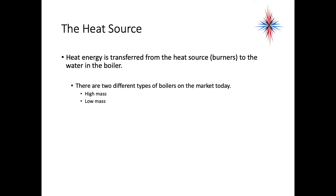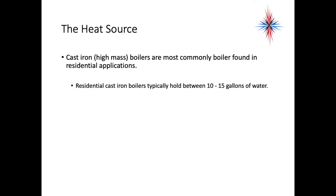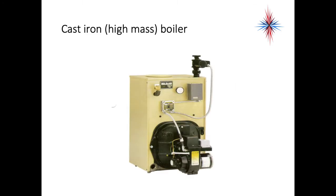Heat energy is transferred from the heat source — the burners — to the water in the boilers. We have two types of boilers on the market today: high-mass and low-mass. The cast-iron boiler is a high-mass boiler and the most commonly found in residential applications, though that's changing. Residential cast-iron boilers typically hold between 10 to 15 gallons of water. Weil-McLain is a pretty good brand that you'll see around a lot.